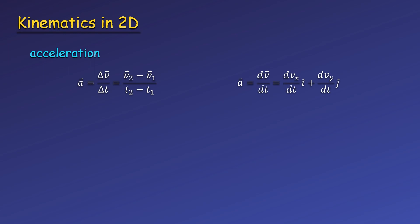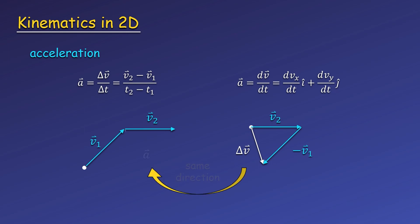We can see this by drawing two velocity vectors. Say an object begins with velocity v1, and a moment later the velocity changes to point along v2. To get the direction of the change in velocity, or delta v, we need to draw v2 first, then subtract or move along minus v1. Connecting our starting point and ending point, we get the direction of delta v, which means the acceleration will point along this same direction.